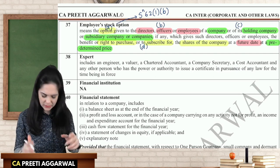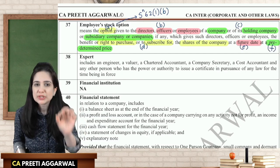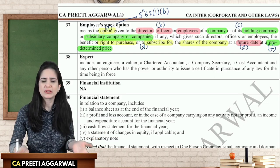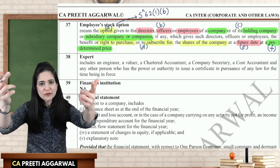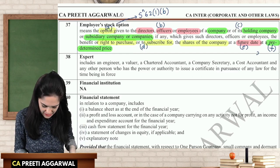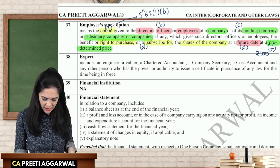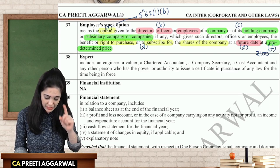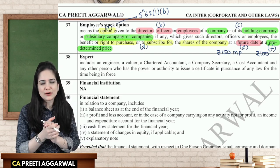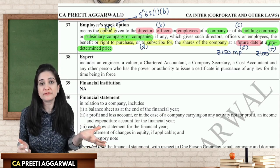Let me highlight the key terms. It is an option given to directors, officers, or employees of a company, holding or subsidiary. The option is to purchase or subscribe for shares at a future date at a predetermined price. For example, if the employee can buy at 100 rupees and the market price is 150 rupees, this is 'in the money' — it makes sense to exercise the option. You buy at 100, sell at 150, making a profit of 50 rupees.